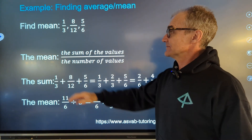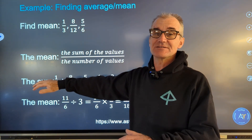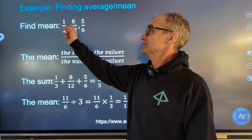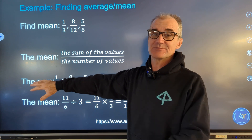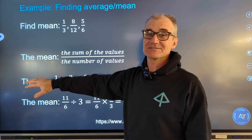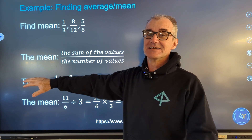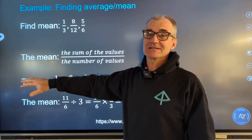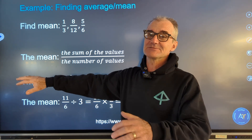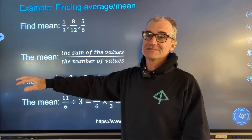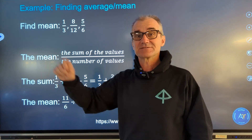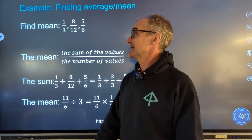Here's another example. Go ahead and pause the video and see if you could do this: find the average of one-third, eight-twelfths, and five-sixths. Make sure you have a notebook and pencil in front of you when you watch these videos. The more work you do, the better you're going to get at it. The only way to get good at standardized math tests is by doing a lot of them — put pencil to paper and get these things figured out.